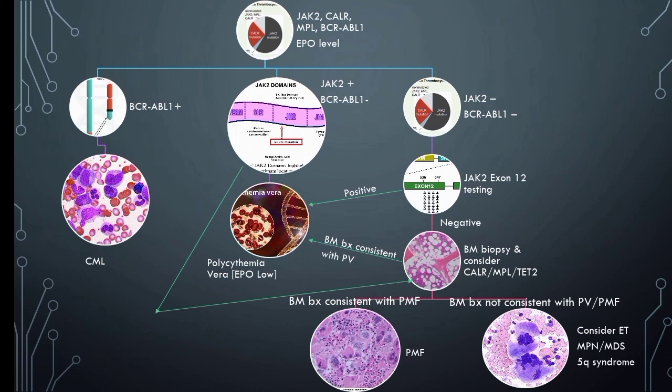If exon 12 testing comes out negative, consider other panel gene mutations like CALR, MPL, and TET2, and perform bone marrow examination for further diagnosis. When extreme thrombocytosis is present with platelet count more than 10 lakh per microliter, consider testing for acquired von Willebrand syndrome.